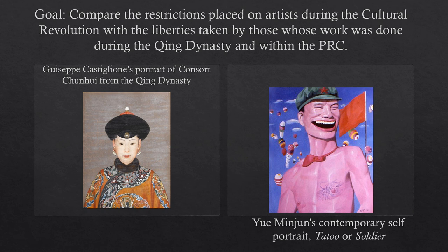Two examples are in this slide. To the left is a portrait of Consort Chun-Hu, and this was done by Giuseppe Castiglione. He was an artist that was not originally from China, but his work — the Western style that he incorporated — would shape and inspire a lot of the court paintings done for the duration of the Qing Dynasty.